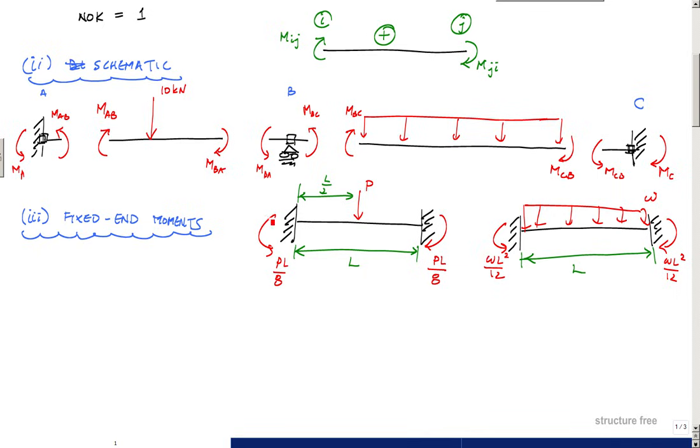You got to be careful - sometimes they put a little negative sign here. You want to be cautious about interpreting that negative sign correctly. This is the correct direction of the moment in this PL over 8, and the negative only comes into play depending on how it relates to your beam end.